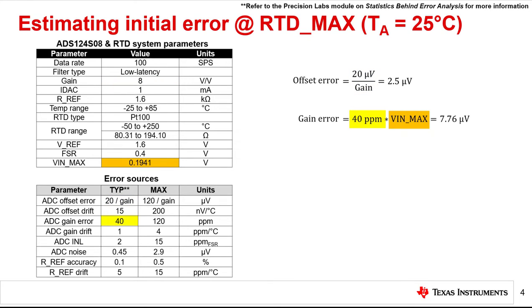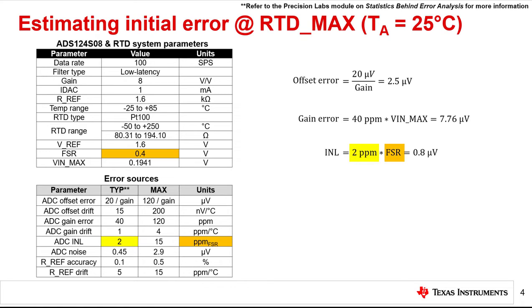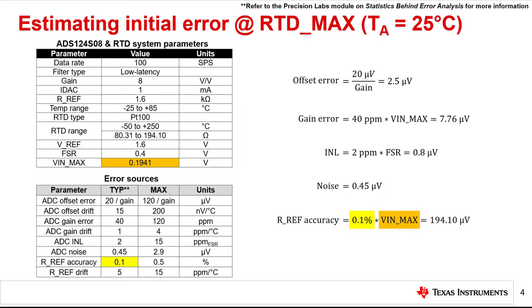Typical gain error is specified as 40 ppm. Since gain error varies with input voltage, we need to multiply the gain error by VNmax, yielding a typical gain error of 7.76 microvolts. Typical INL is specified as 2 ppm of FSR, so we multiply the INL in ppm by the FSR, giving 0.8 microvolts. The ADC noise at the system settings is 0.45 microvolts. Finally, typical RREF accuracy is 0.1%, which converts to 194.1 microvolts. RREF accuracy is clearly the dominant initial error.